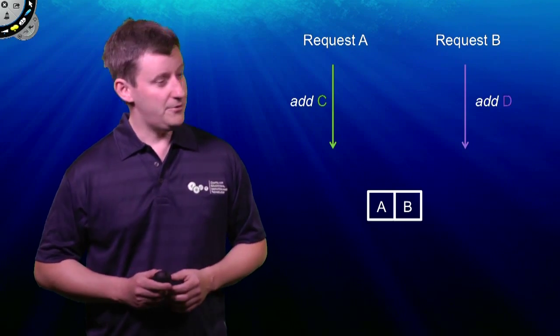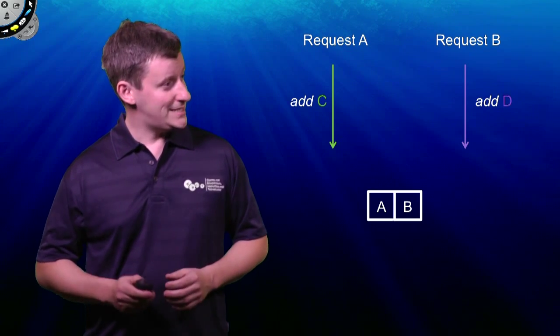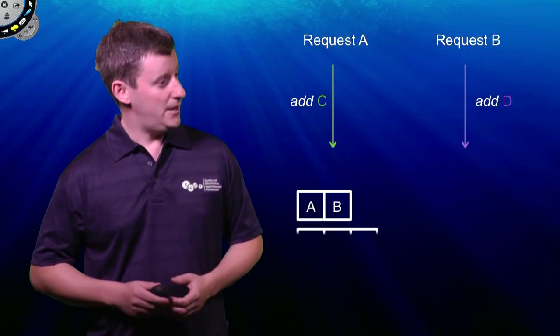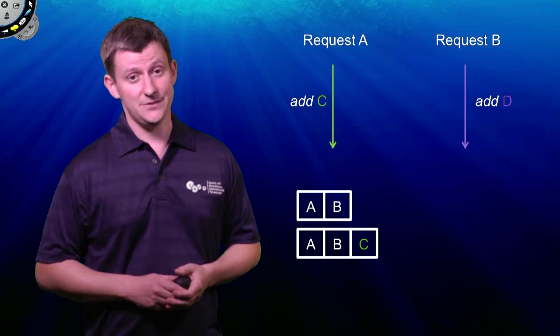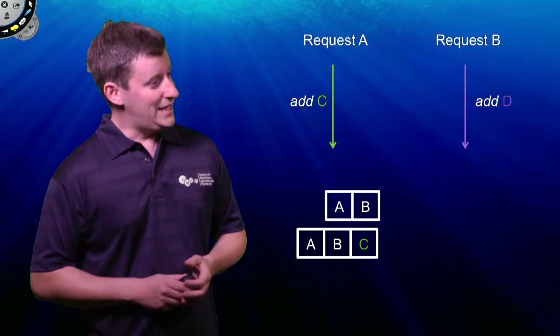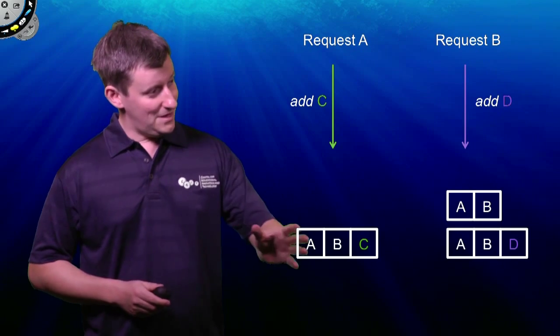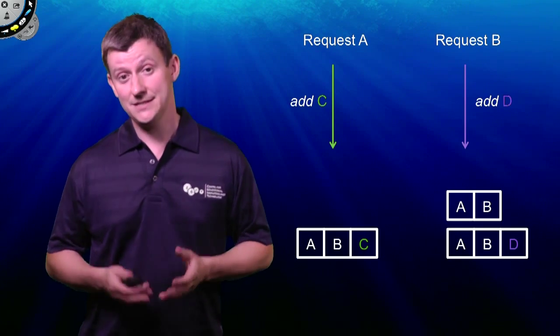Suppose, for instance, our two threads, instead of adding their data into an array list, they were calling add on an immutable list. Then, when request A called add, instead of modifying the existing list, it would get a new list that has the existing data and the new item that it's trying to add. And request B, when it calls add on this list, it would get a new list containing the existing data plus the data item that it's trying to add.